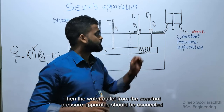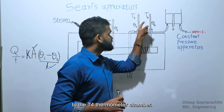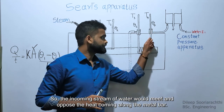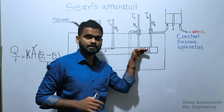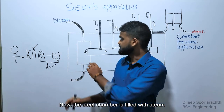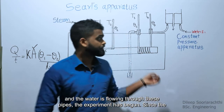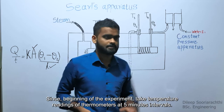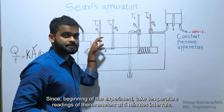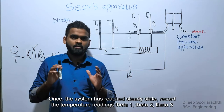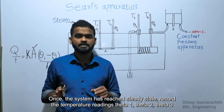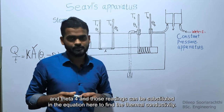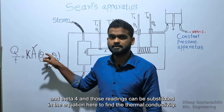Then the water outlet from the constant pressure apparatus should be connected so the incoming stream of water meets and opposes the heat coming along the metal bar. Now the steam chamber is filled with steam and the water is flowing through these pipes — the experiment has begun. Since the beginning of the experiment, take temperature readings of all thermometers at 5-minute intervals. Once the system has reached steady state, record the temperature readings Theta 1, Theta 2, Theta 3, and Theta 4, and those readings can be substituted in the equation to find the thermal conductivity.